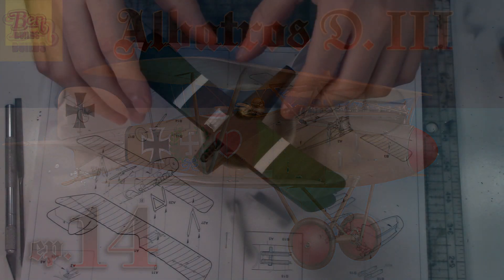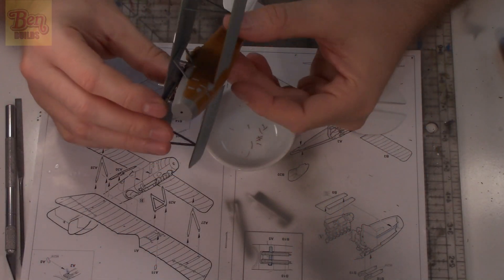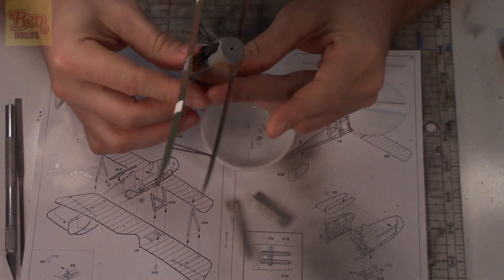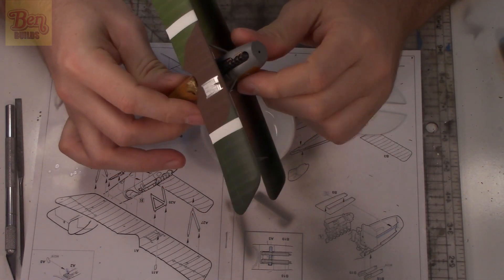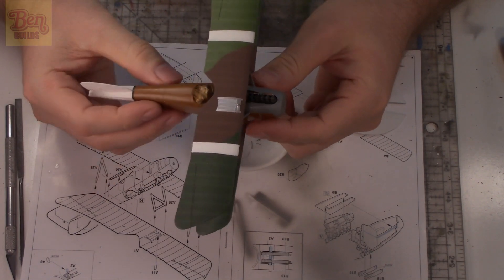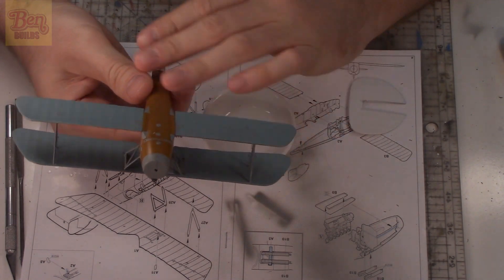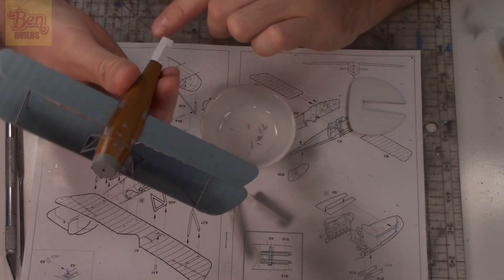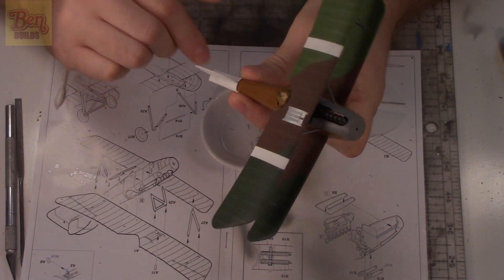What's going on everybody, Gentleman 94 here, welcome back to Ben Builds. It's been a couple of weeks, but we're back on the Albatross. This is episode number 14. I'm hoping to get a little bit more work done today and get it one step closer to being finished. We still have features to do: landing gears, a rear tail assembly to put together, decals, and final weathering. There's a lot left to do, so let's dive on in.